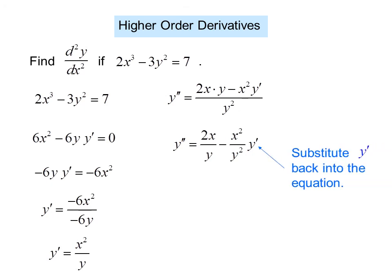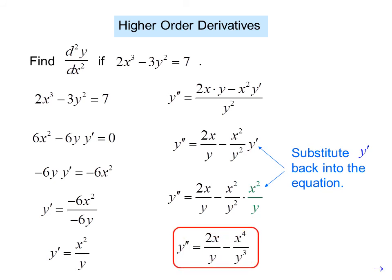Or y double prime equals 2x over y minus x squared over y squared times y prime. But we know what y prime is. So we substitute y prime back into the equation. So now y double prime equals 2x over y minus x squared over y squared times x squared over y. And we simplify to get y double prime equals 2x over y minus x to the fourth over y cubed.